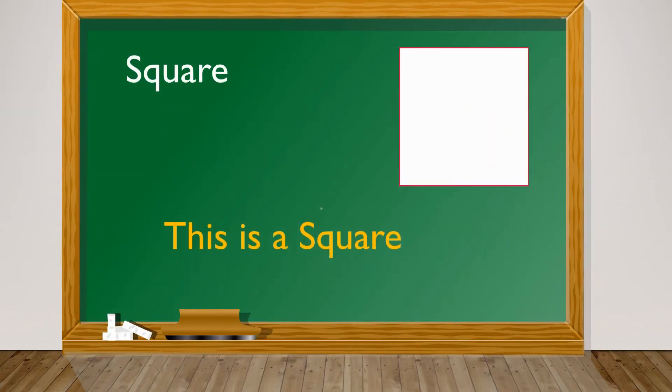Now next shape is square. This is a square. Square has four sides and all sides are equal.